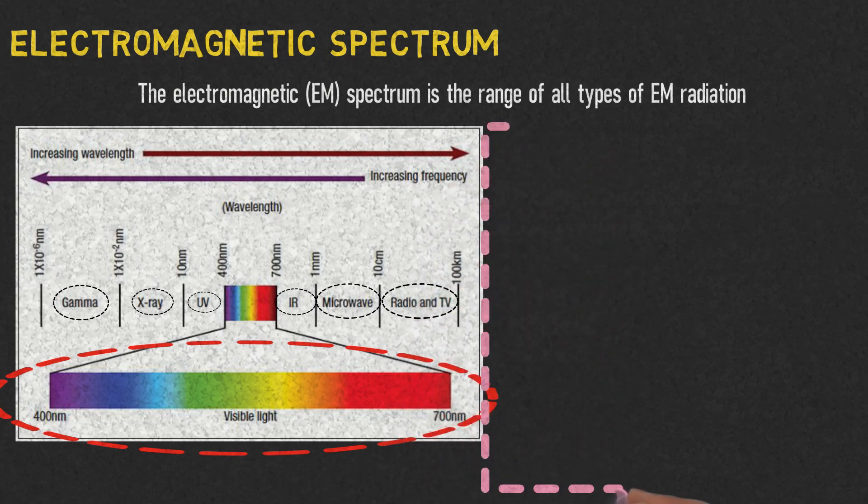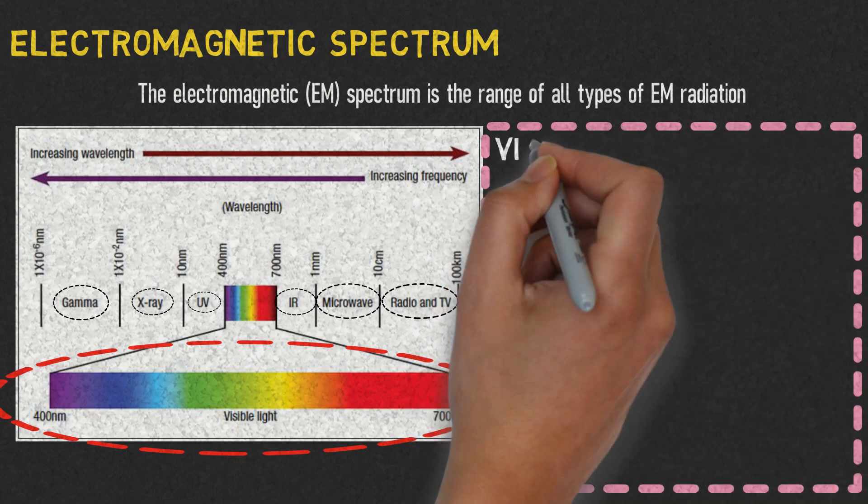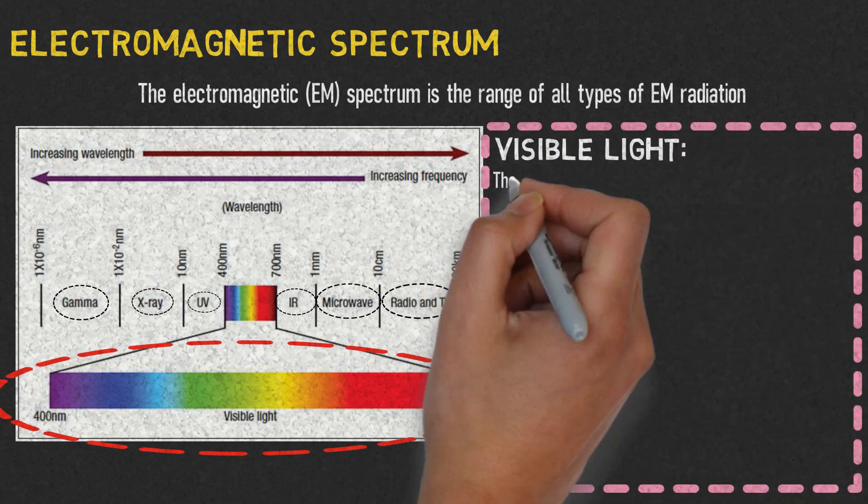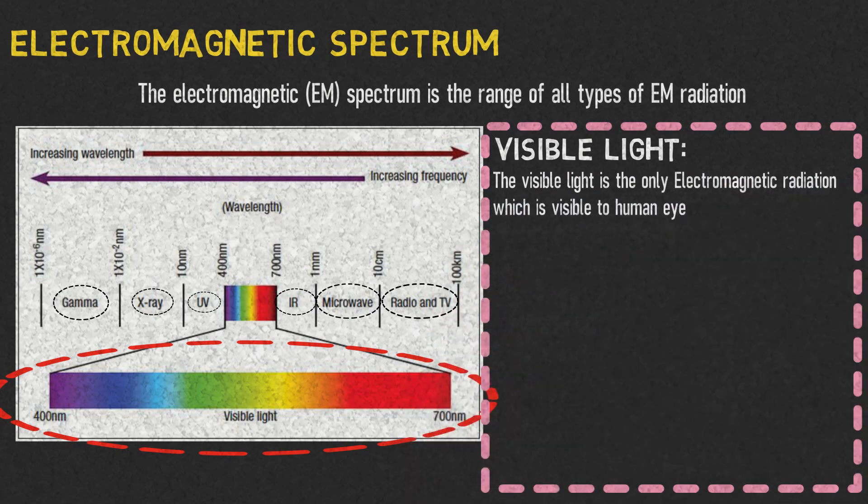Among all these electromagnetic waves, the most important one for humans is visible light. Visible light is the only electromagnetic radiation which is visible to the human eye.